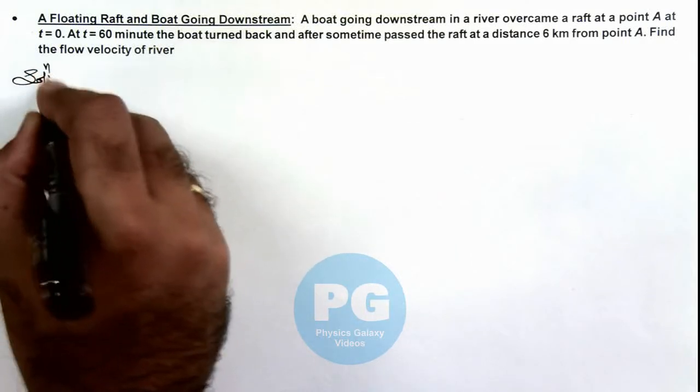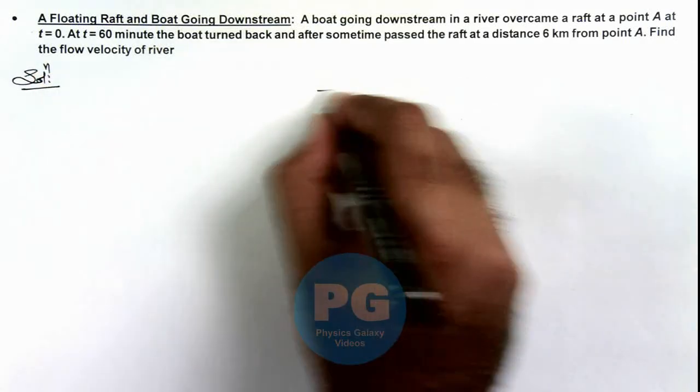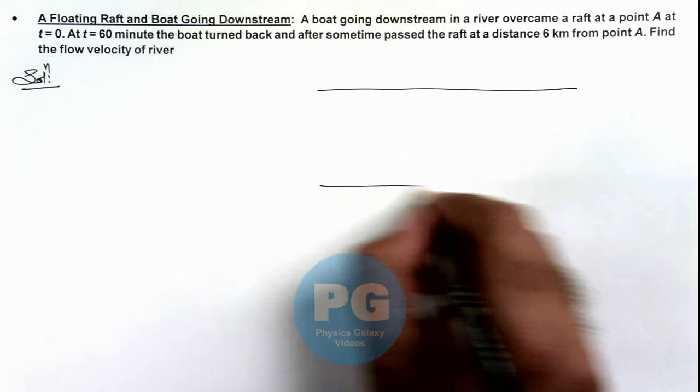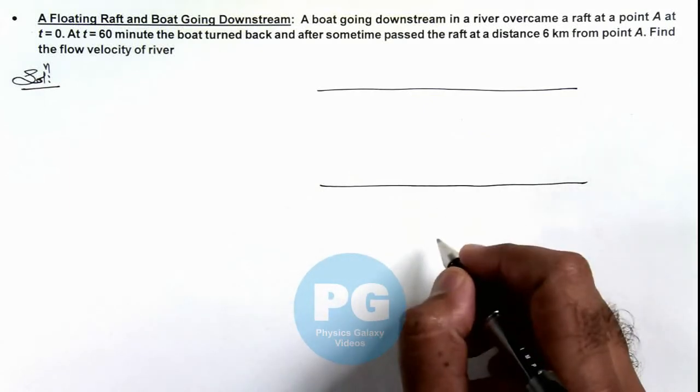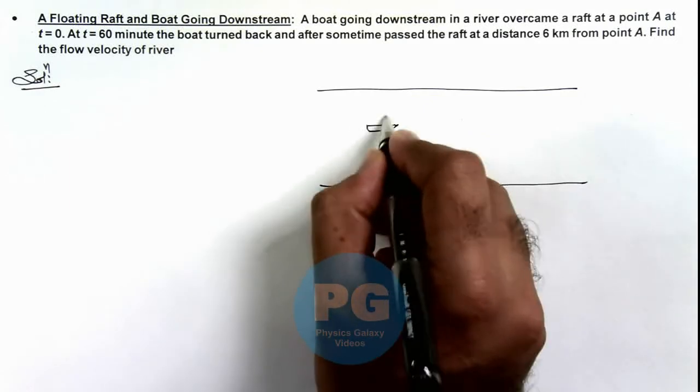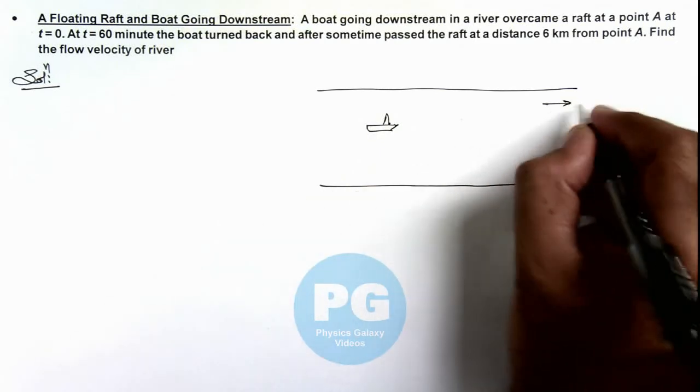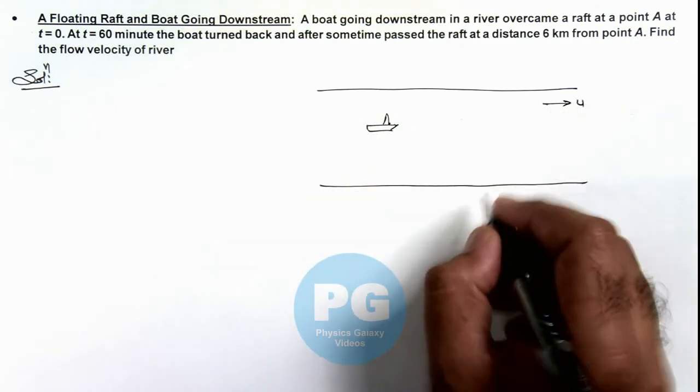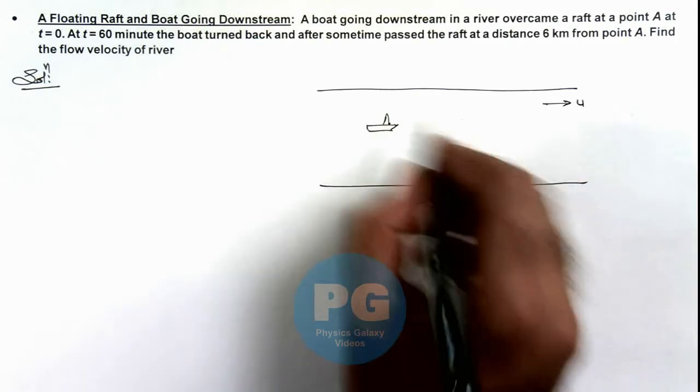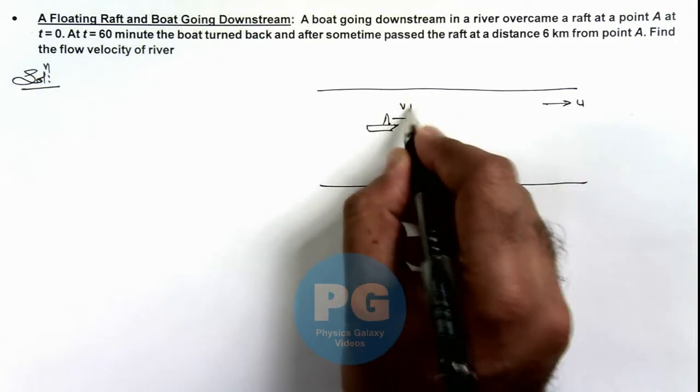Let us analyze this situation and first draw it pictorially to understand it better. Here we have a boat. If the river is flowing at speed u and the boat speed with respect to the river is v, then the speed of the boat would be v plus u.